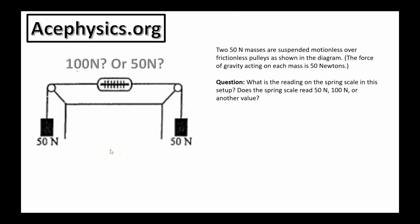We'll begin with Configuration A. Two 50-Newton masses are suspended motionless over frictionless pulleys as shown in the diagram. This is a 50-Newton mass connected by a string to another 50-Newton mass, and there's a spring scale in the center. The question is, what is the reading on the spring scale in this setup? Does the spring scale read 50 Newtons, 100 Newtons, or another value? Do you know the answer? I'll go over the answer on the next slide.